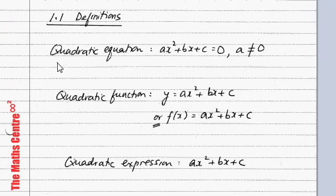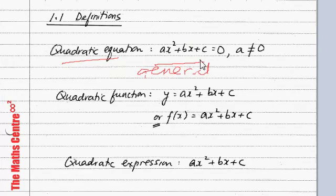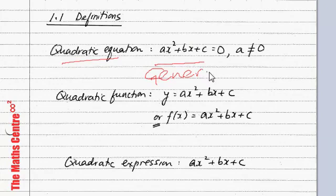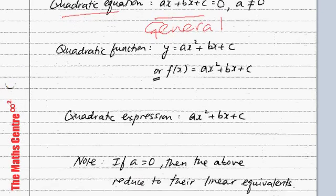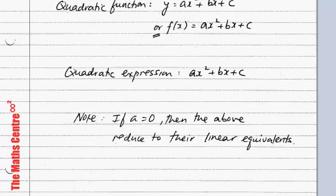A quadratic equation will be of this form: ax squared plus bx plus c equals to 0. This is called the general form of the quadratic equation. Remember, a is not equal to 0. The quadratic function will be y equals to ax squared plus bx plus c, or f of x equals to ax squared plus bx plus c. A quadratic expression has no y and no equals to 0 — it's just plain ax squared plus bx plus c.